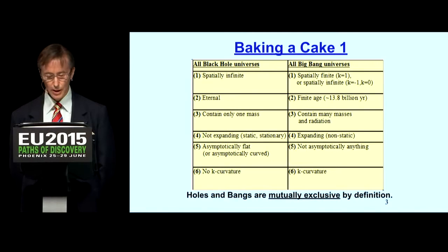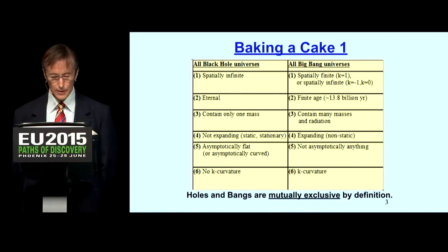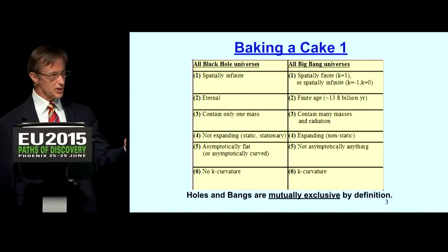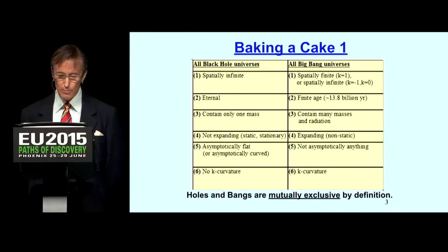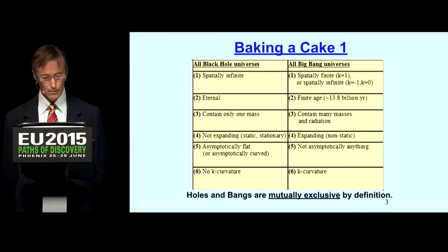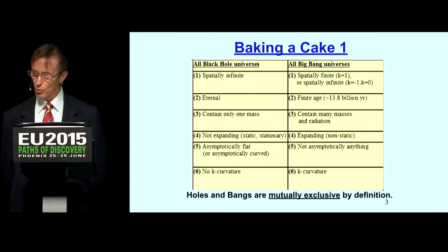The black hole universe by definition contains only one mass, which doesn't correspond to what we see in the sky. Big Bang universes allegedly contain as many masses as you like and radiation. All black hole universes are not expanding — they're static — but all Big Bang universes are non-static. All black hole universes are asymptotically flat, whereas no Big Bang universe is asymptotically anything. No black hole universes have a k curvature, but all Big Bang universes have a k curvature with one of three different values.